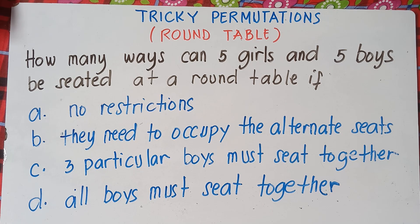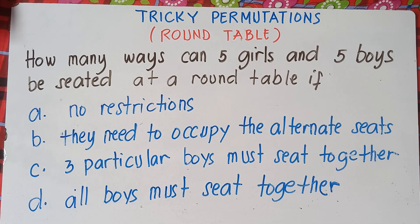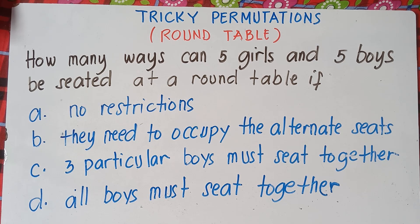So how many ways can five girls and five boys be seated at a round table? First question: no restrictions. Letter B: they need to occupy the alternate seats. Letter C: three particular boys must sit together. And letter D: all boys must sit together.